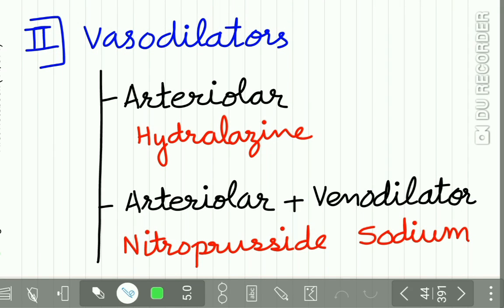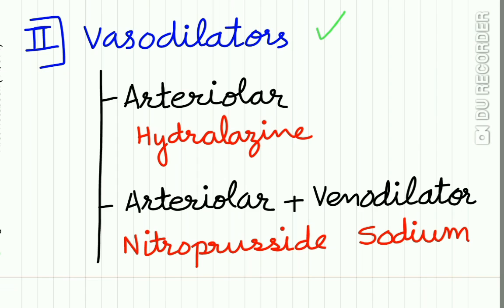The second group is vasodilators, which are of two types: arteriolar dilators, which include hydralazine, and arteriolar plus venodilators, which include sodium nitroprusside.